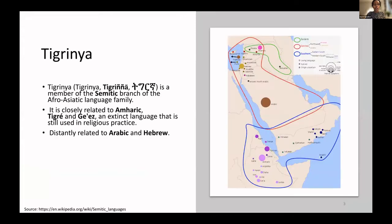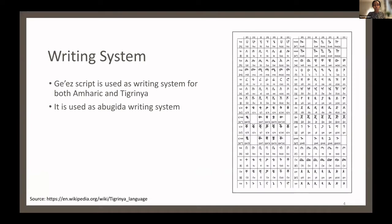For introduction, this image and text is from Wikipedia. Tigrinya is part of the Semitic branch of languages and it is closely related to Amharic and Tigre, and they are written in the same script. The Tigrinya language uses the Ge'ez writing system.